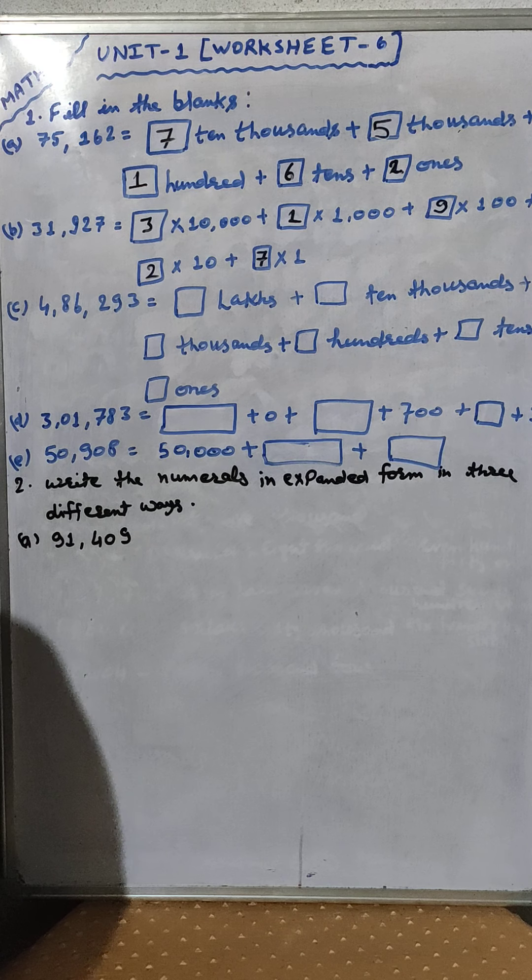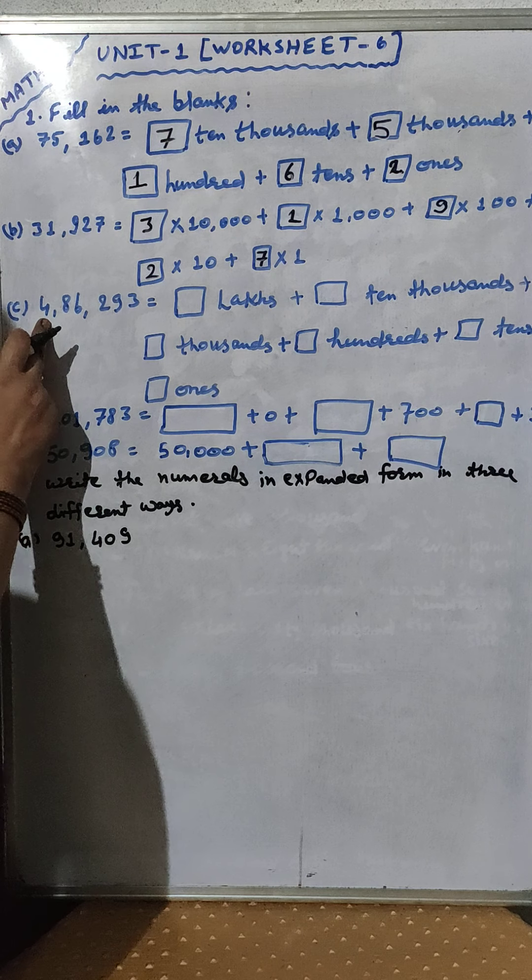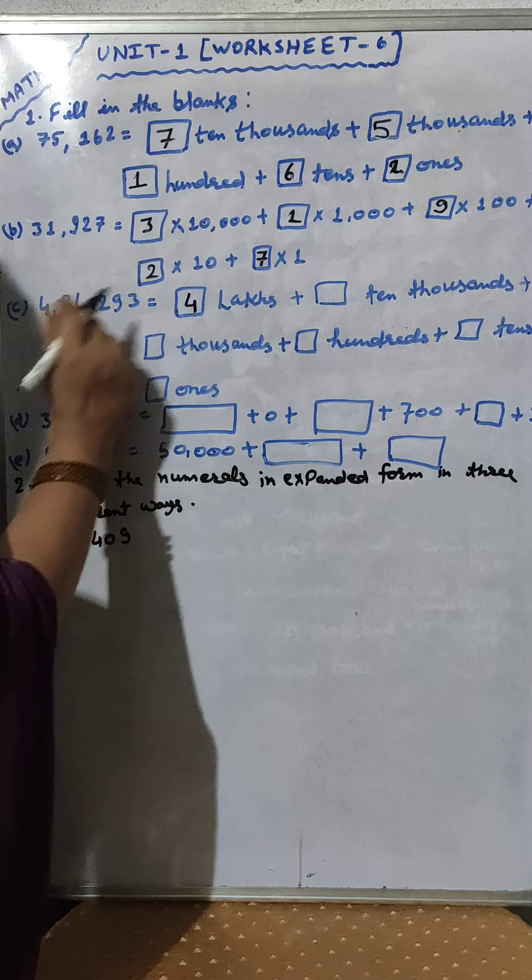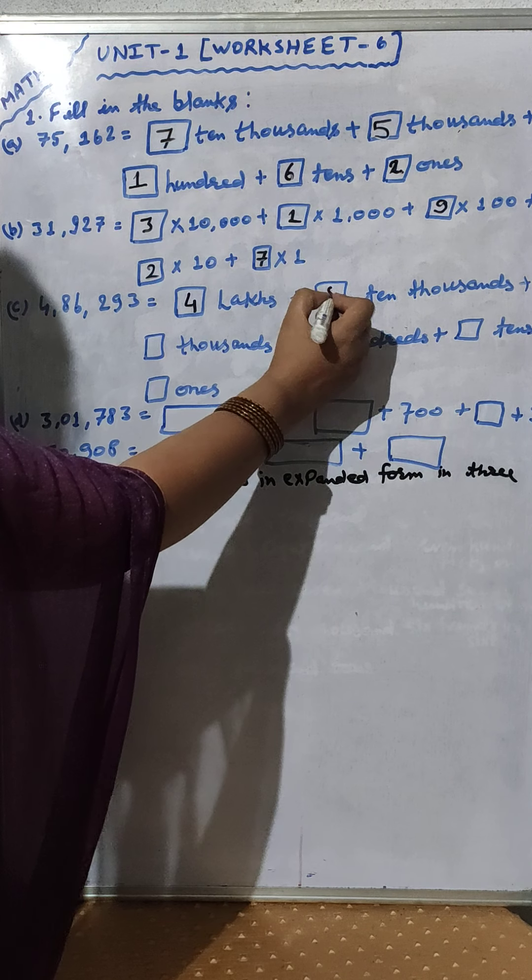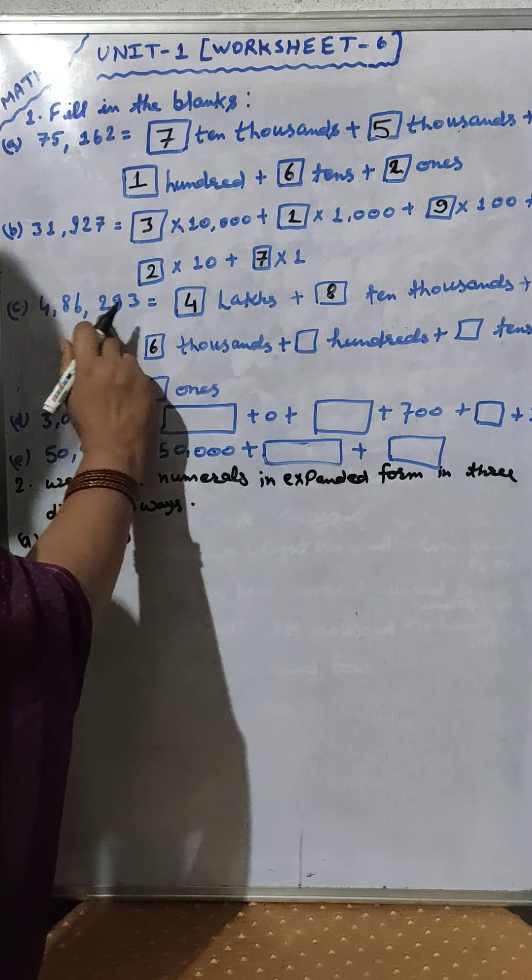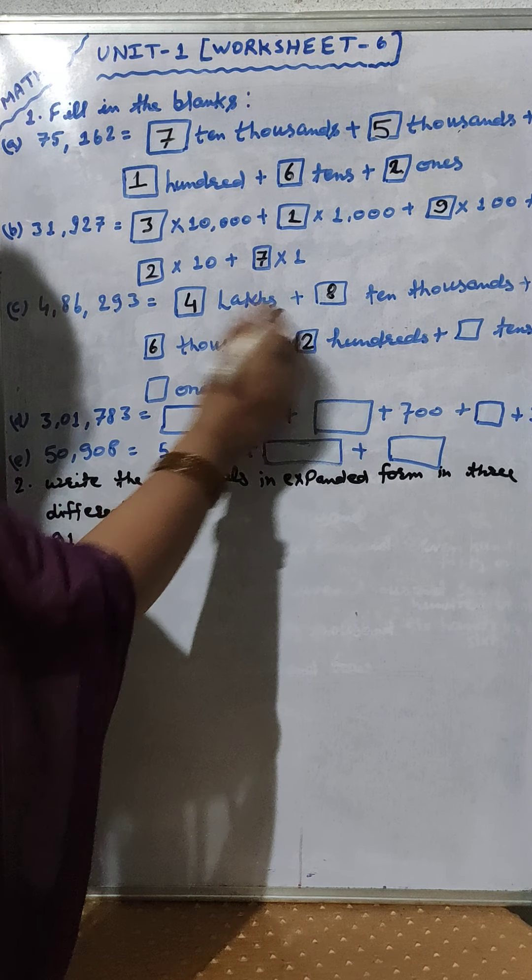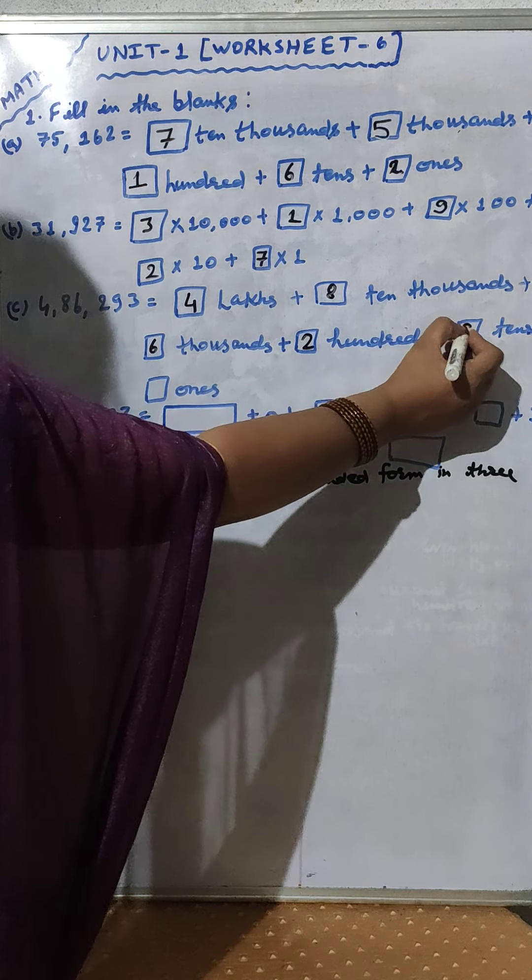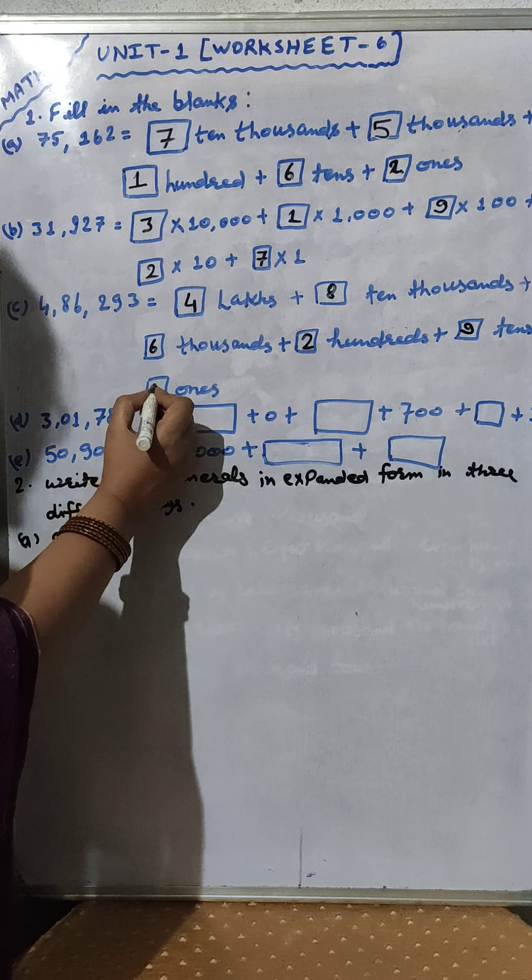Question number C. 4 lakhs - 4 is in the place of lakhs, 8 ten thousands, 6 thousands, 2 hundreds, 9 tens, and last 3 ones.